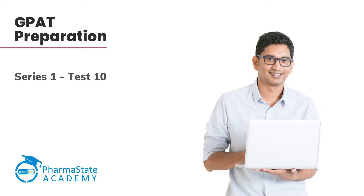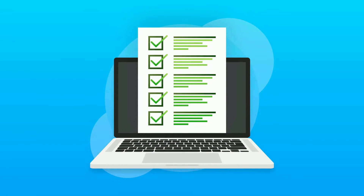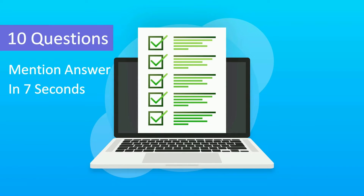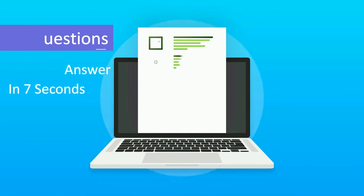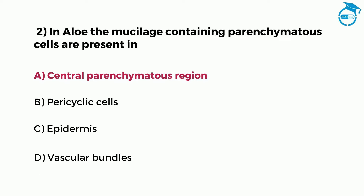Before we start the test, let us understand the process. This test consists of 10 questions and you will get 7 seconds to write your answer in the comments. For example, if the answer to question 1 is option B, you can write in the comments 1B. Similarly, if the answer to question 2 is option A, you can write in the comments 2A.